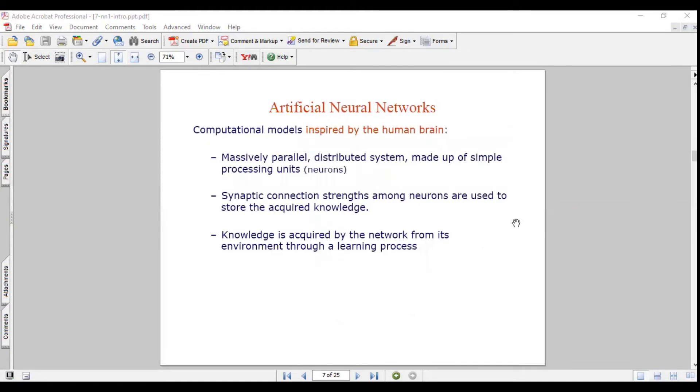When compared to the artificial neural network, computation models are inspired by the human brain. There is no doubt about it. Massive parallel distributed system made of simple processing units, and these units are called neurons. Synaptic connection strengths among neurons are used to store the acquired knowledge. Whatever knowledge we gain is used to store in the synaptic connections. The knowledge is stored in the neurons. Knowledge is acquired by the network from its environment through a learning process.